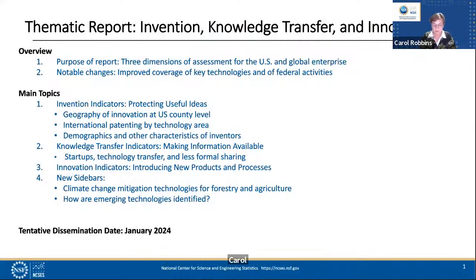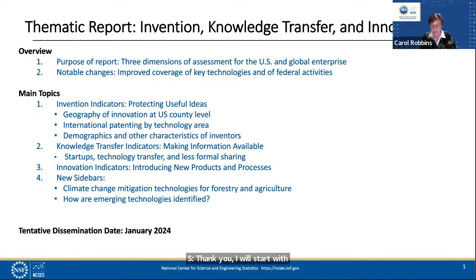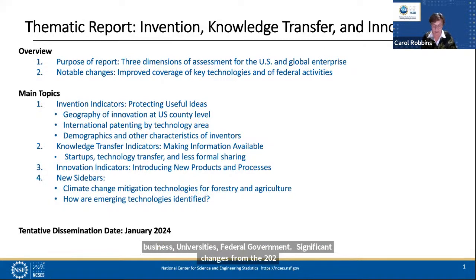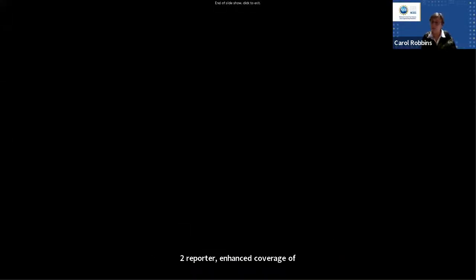I'm going to turn the floor over to report author Carol Robbins. Thank you, Maureen. I'm going to begin with an overview covering the purpose of the report and notable changes since last publication. The report's purpose is to provide an overview for assessing the U.S. and global science and engineering enterprise through three dimensions of activity: invention, knowledge transfer, and innovation. Each topic is explored through indicators organized by sector — for example, business, universities, federal government. Significant changes from the 2022 report are enhanced coverage of federal agency activities and some topic consolidation to streamline the report.